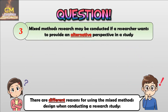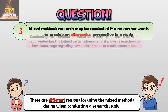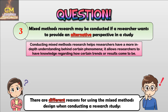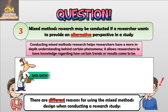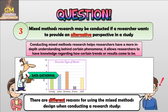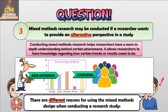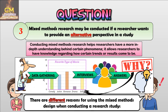And lastly, mixed methods research may be conducted if a researcher wants to provide an alternative perspective in a study. Conducting mixed methods research helps researchers have a more in-depth understanding behind certain phenomena and allows them to gain knowledge regarding how certain trends or results come to be. For example, a researcher based on initial data gathering was able to determine the most favorite type of movie. In order to learn more, he then conducts interviews with selected research participants, finding more answers that explain the reasons behind the gathered data.